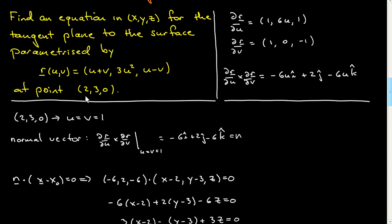One of the things you're going to have to do is, given this point in three space, work out what u and v are that correspond to that point. Since z is zero, that tells you u has to be equal to v, and then from the fact that x is equal to 2, you can work out that u and v have to be 1, and that's consistent with the y component. So this point corresponds to u equal v equal 1.